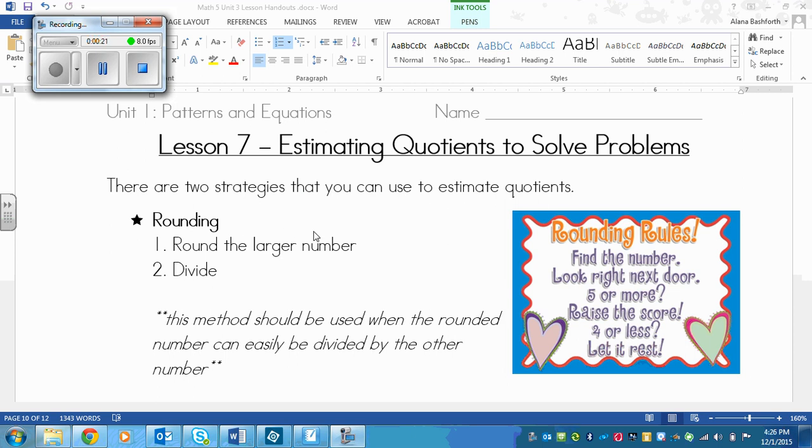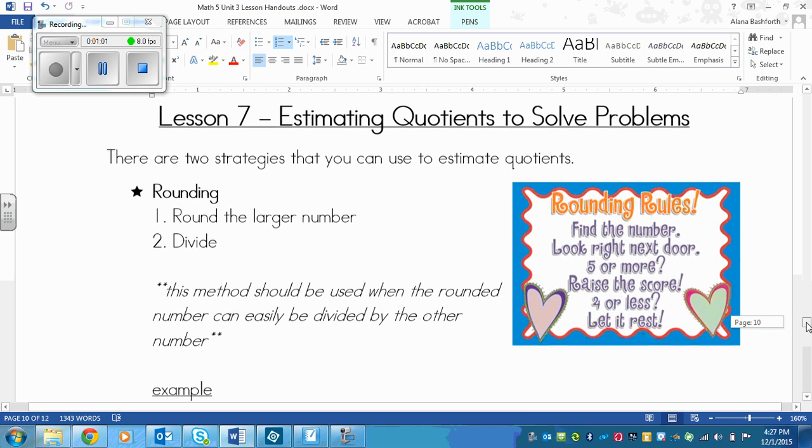There are two strategies that you can use to estimate quotients. The first one is one that we are familiar with, but it's not as easy to use because dividing needs specific numbers for it to work. You round the larger number, leave the smaller number the same so that your answer isn't too different, and then you divide. This method should be used when the rounded number can easily be divided by the other number.